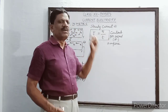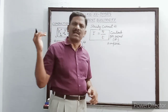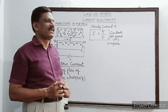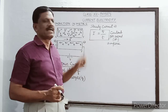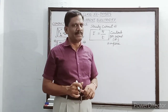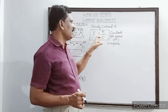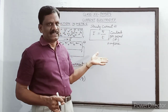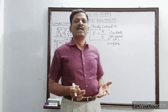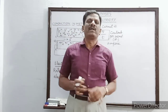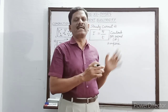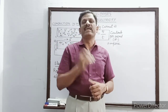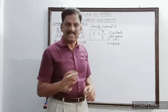When one coulomb of charge crosses the cross section of the conductor during one second of time, the current is said to be one ampere. One ampere is also equal to one coulomb per second. Sometimes, unequal quantities of charges will flow through the conductor in equal intervals of time — in such a case the current is not steady; it is called unsteady current.